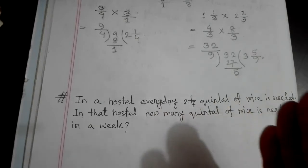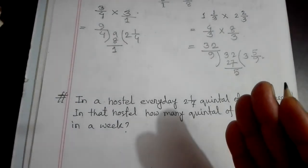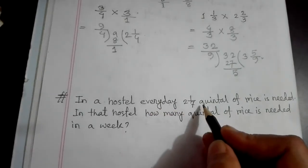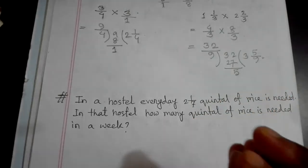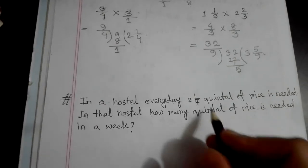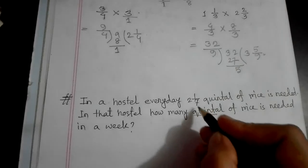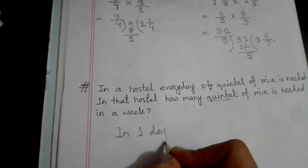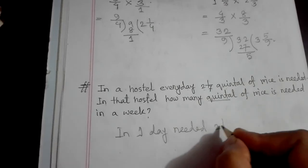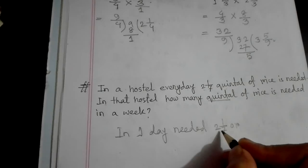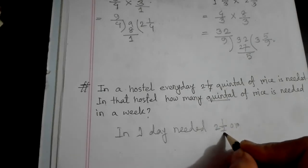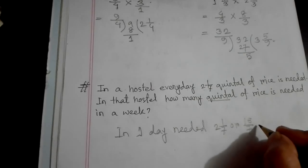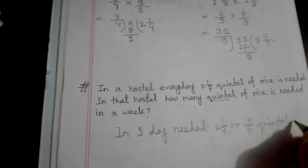If in 1 day we need this much rice, in 7 days we multiply by 7. In one day needed: 2 whole 1 by 7. We can convert this mixed fraction to improper: 7 times 2 is 14, plus 1 is 15, so 15 by 7. In one day needed 15 by 7 quintal of rice.